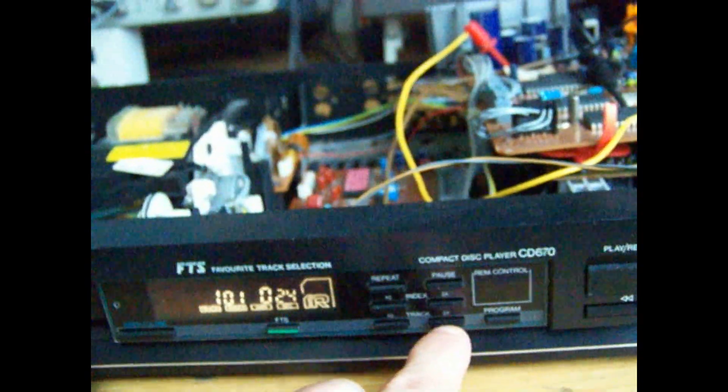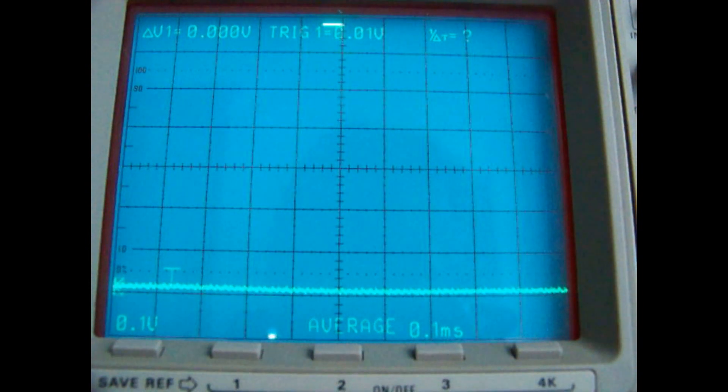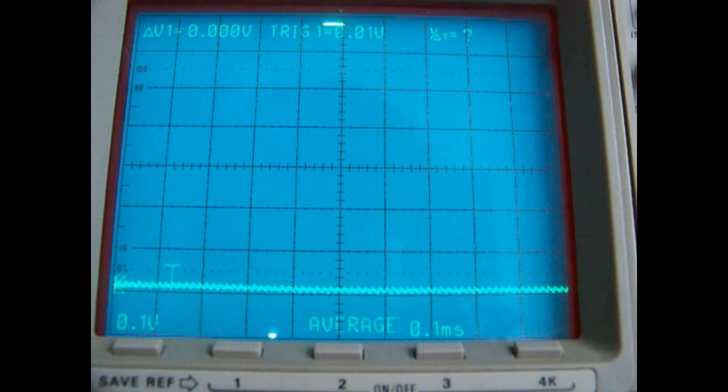Now I want to show you what happens to the error signal when I skip from track to track. To do that, I put my camera close to the oscilloscope. And now I skip to track number two. As you have seen, some error while lining up to the new track. Okay, this is track number three.